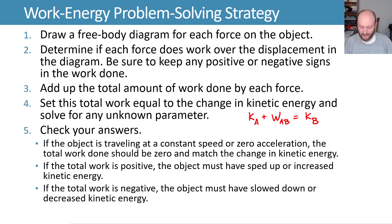If the total work is positive then we should have more kinetic energy at the end so we should have sped up. And if the total work is negative then we should have less kinetic energy at the end so we should have slowed down. That's the general process for solving work energy problems.